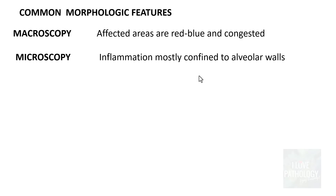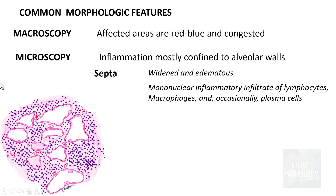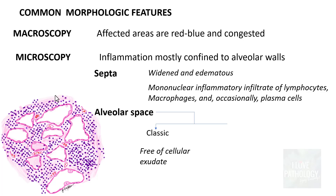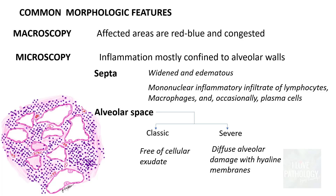Microscopically, inflammation is mostly confined to the alveolar septa. The septa are often widened and edematous, containing lots of mononuclear inflammatory cells — lymphocytes, macrophages, and occasionally plasma cells. In the classic case of viral pneumonia, the alveolar spaces should be free of cellular exudate. In severe cases, there can be diffuse alveolar damage, the alveolar epithelium can be damaged, and hyaline membranes may form.